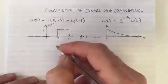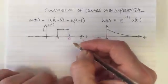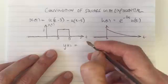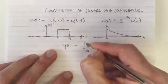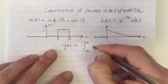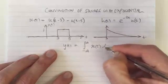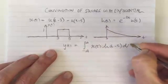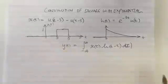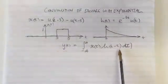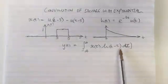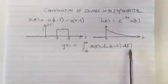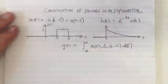Now let's remind ourselves of the convolution integral: y(t) equals the integral from minus infinity to infinity of x(τ) times h(t minus τ) dτ. We need to plot both of these functions as a function of τ, then multiply them and add up the area — that's what the integral means.